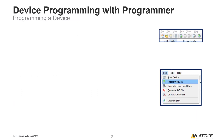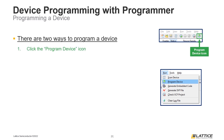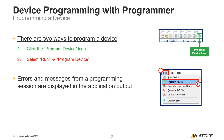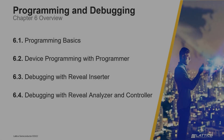Once a device has been selected and configured, the final step is to program the physical device. There are two ways to do this: select the Program Device icon, or select Run from the menu bar and then Program Device from the drop-down list. As a device is being programmed, messages and errors about the programming progress will be posted to the Application Output. Note that Program Device will always be the final step in the programmer flow regardless of the mode of operation — for example, if Erase Only mode was selected, users would still need to run Program Device for their selection to take effect.